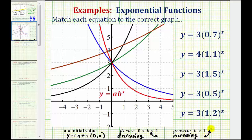Now let's take a look at our equations again and first focus on the value of a, or the initial value. Notice all these functions have an initial value of three, except one function. Since a is equal to four, that graph has a y-intercept of four, and because b is greater than one, we have exponential growth.